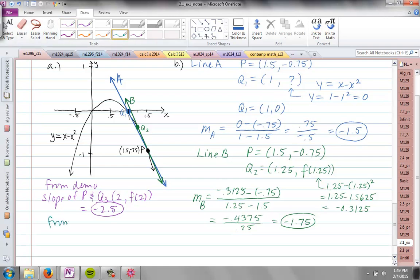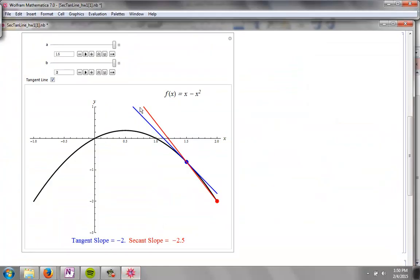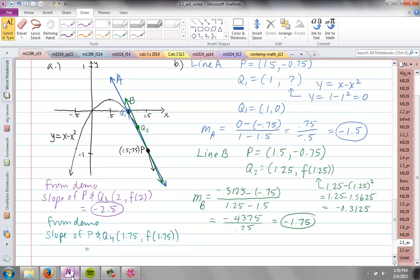Also from demo, the next one we want to find is the slope of the secant line between P and Q₄, which has an x-coordinate of 1.75. Let's take a look at that. We'll enter 1.75. It's a point getting closer to x = 1.5 where P is, and we have a secant slope of -2.25.